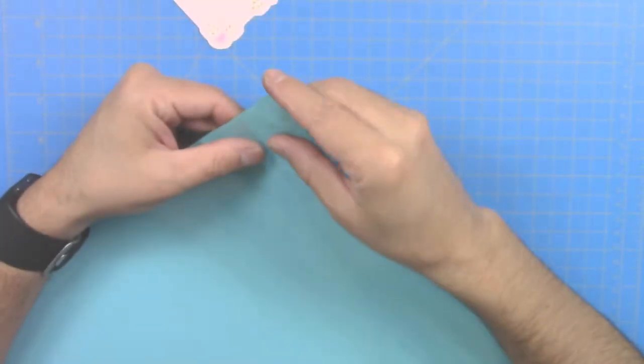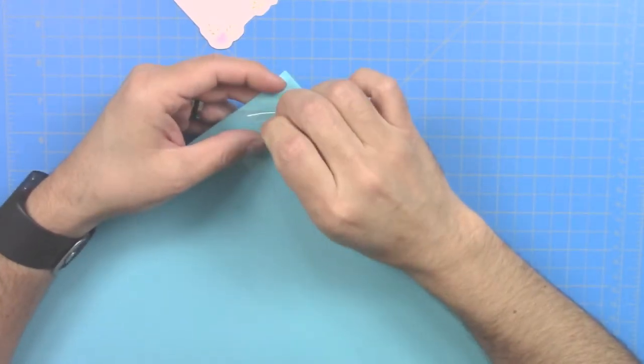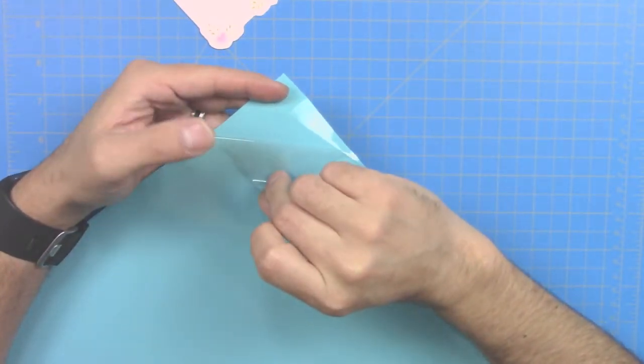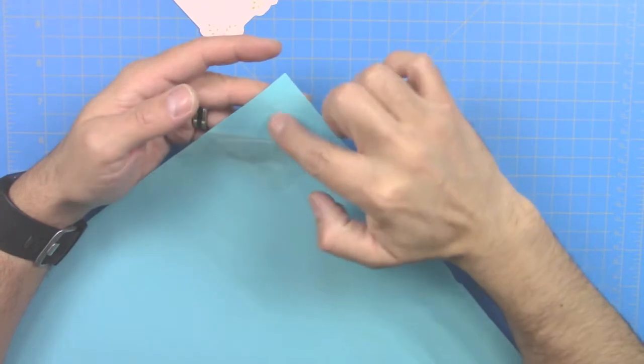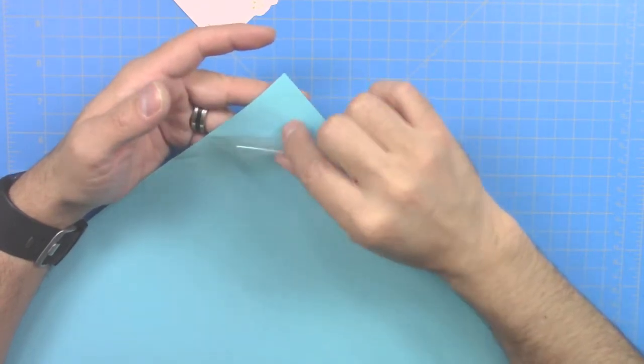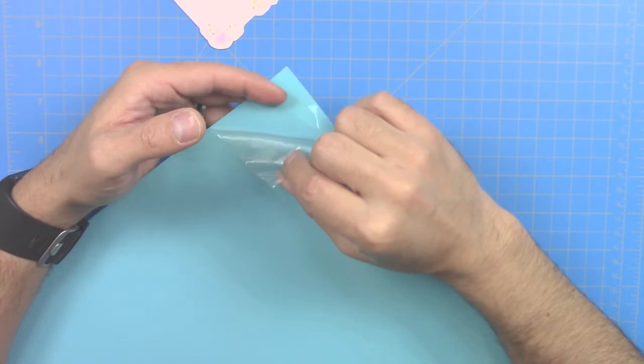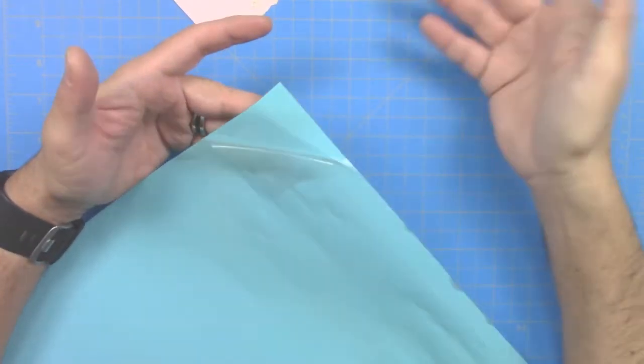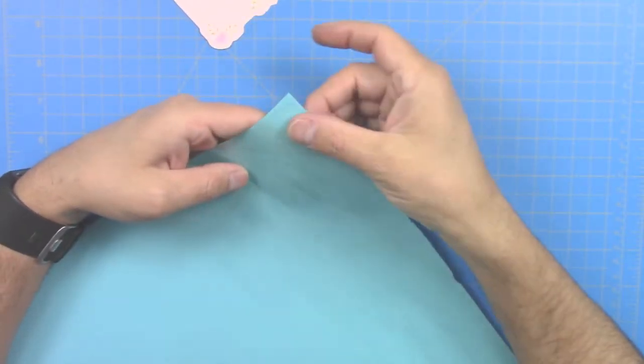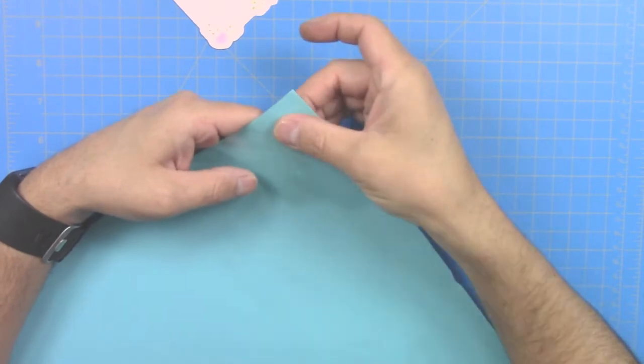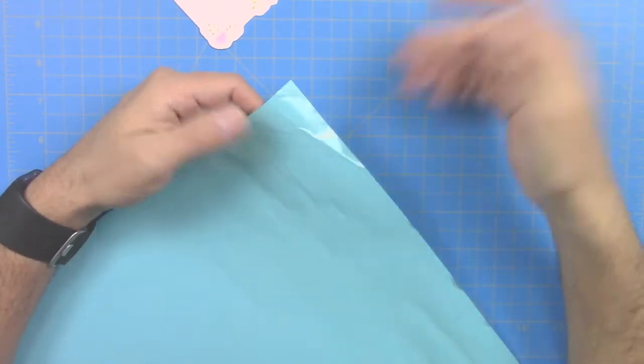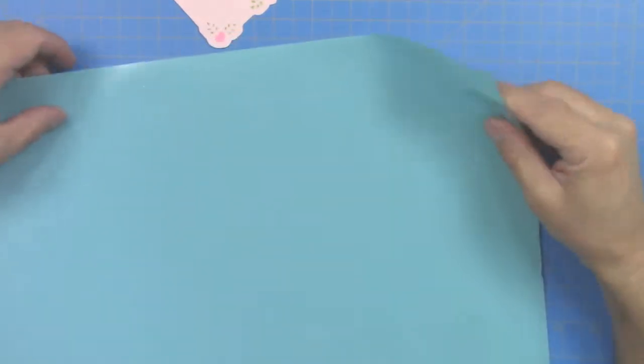Remember this material comes with a backing, a piece of plastic backing that you have to remove in order to cut on your machine. I don't really know what the backing is for because this material doesn't have any adhesive, so I think it's just to protect the surface from scratching.